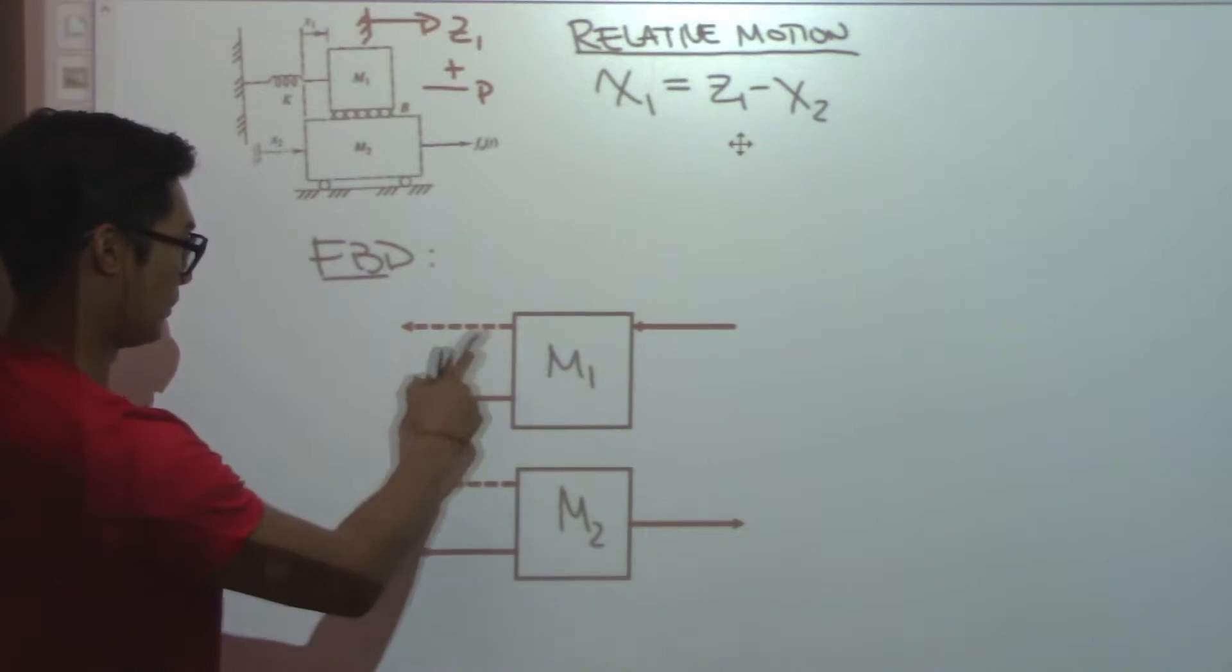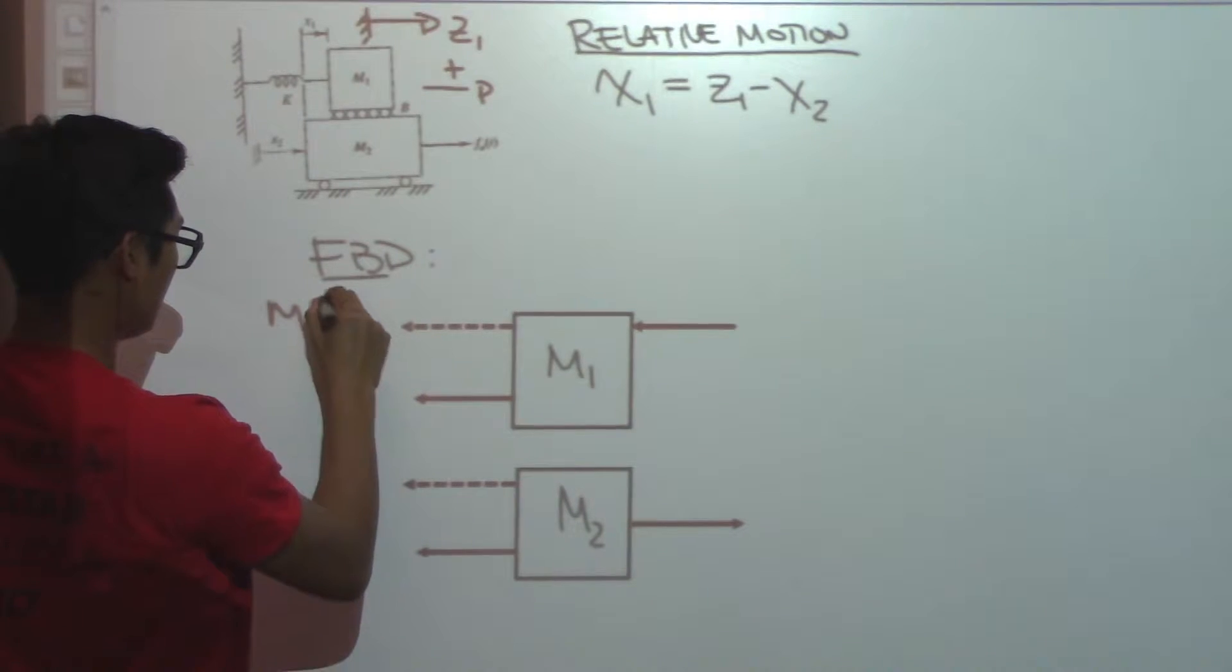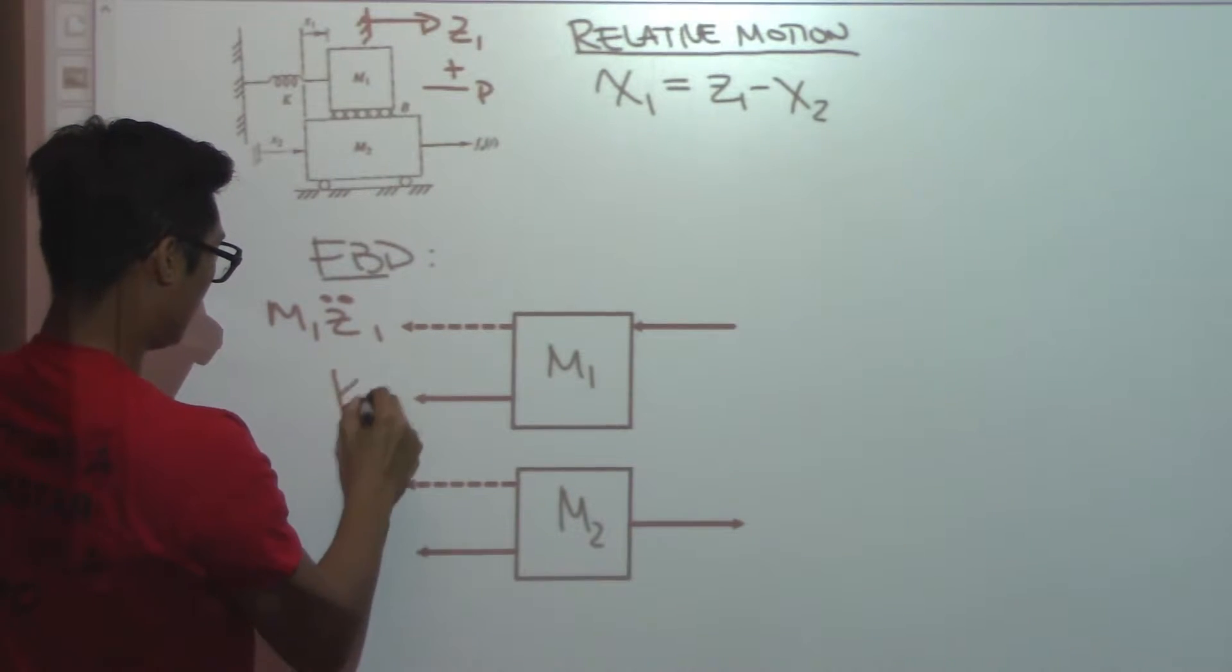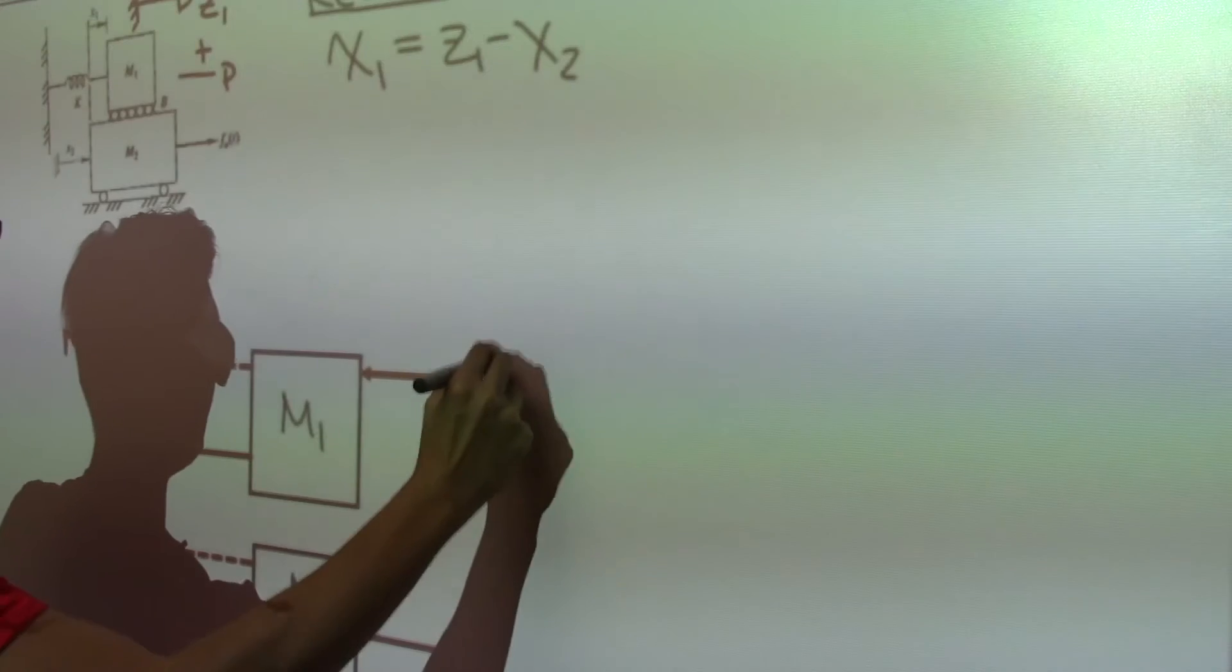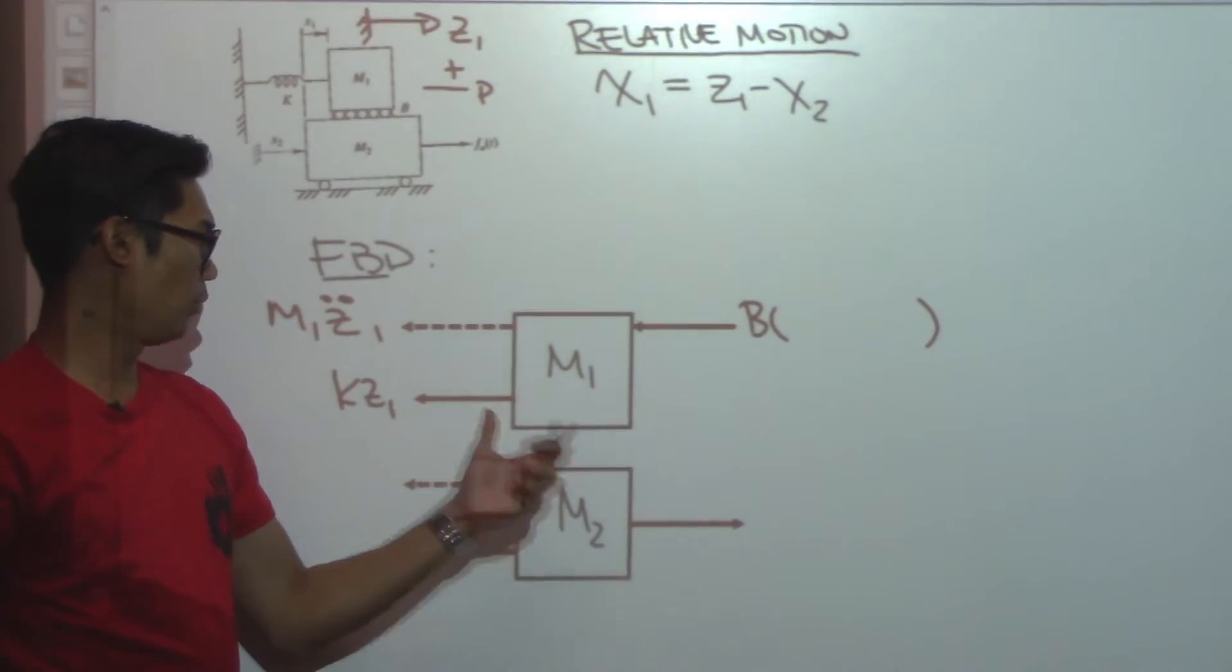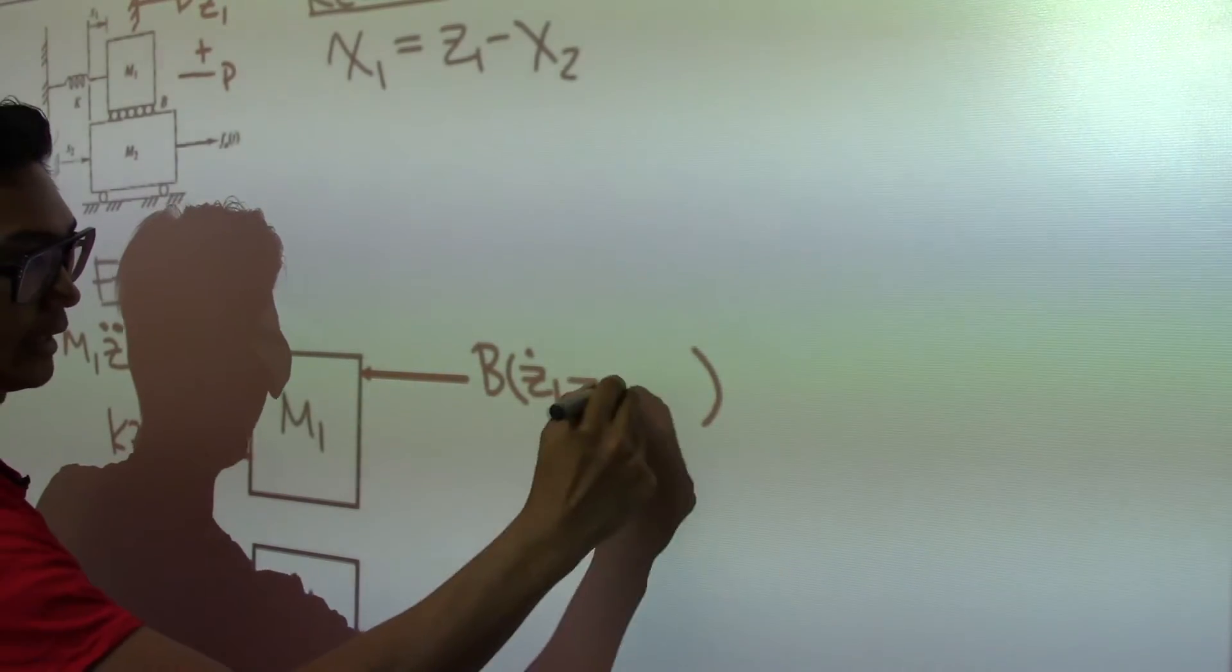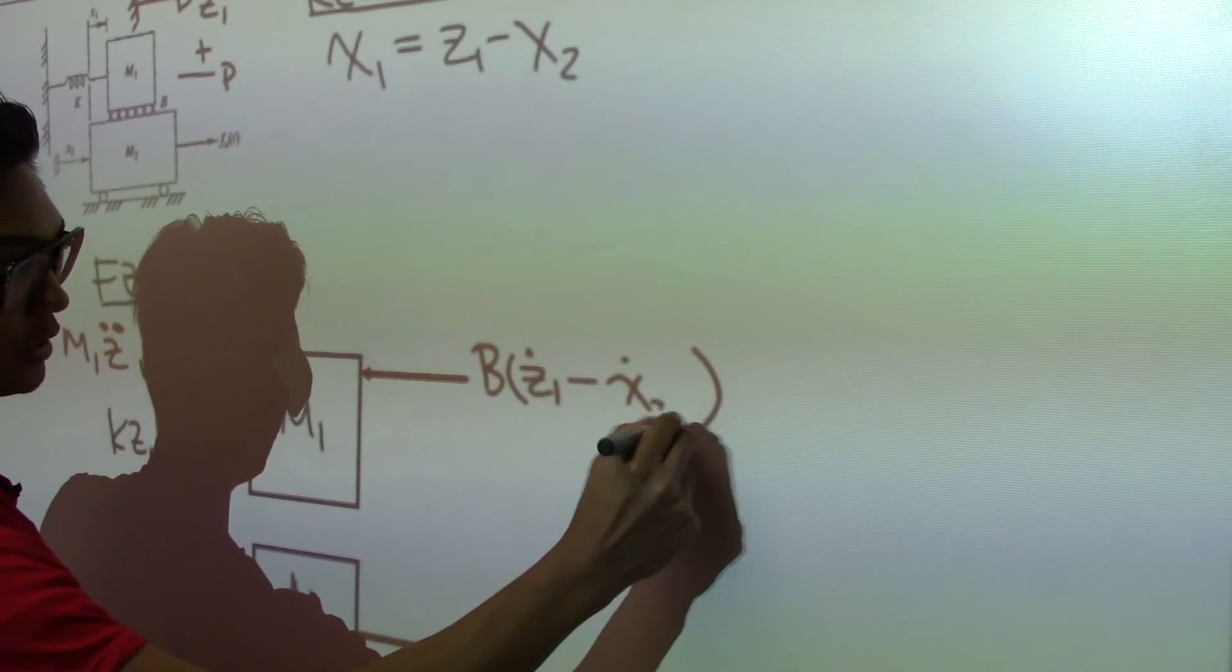So let's start filling in the blanks here. So for here, the inertial is going to be M1 Z double dot 1, KZ1. Here we'll have B, and then we'll have something in brackets here. So since M1 is dependent on Z1, Z1 should be first in the brackets. So we'll have Z dot 1 minus X dot 2.